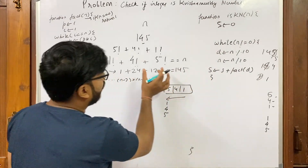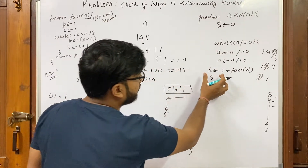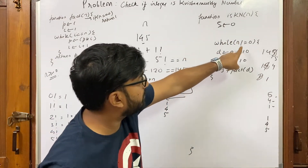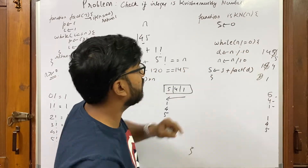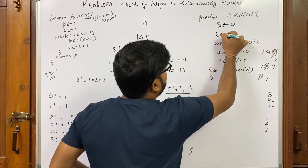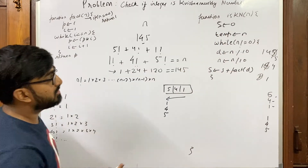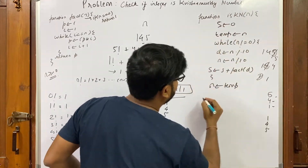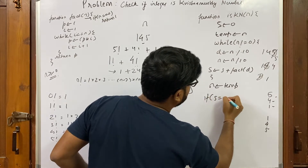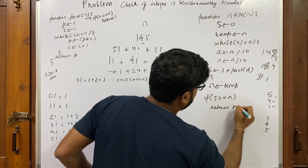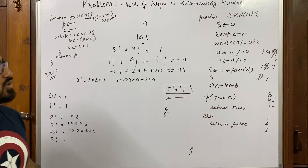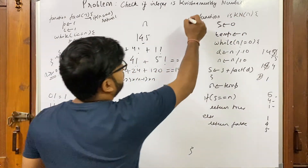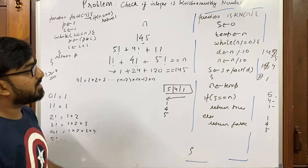We simply add the factorial of the current digit to a running sum s, which starts at zero. This stores the sum of factorials of individual digits. Then we check if s equals the original value of n. Since n goes to zero after the loop, we store n in a temp variable beforehand and restore it after the loop. If the calculated sum equals the original n, return true, else return false.